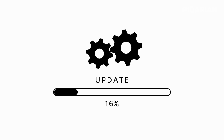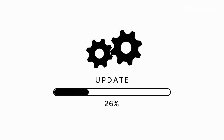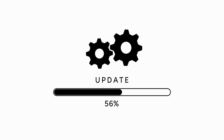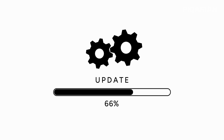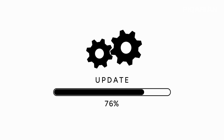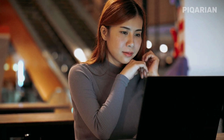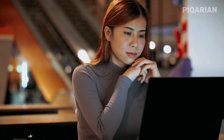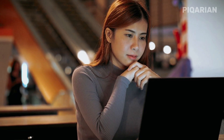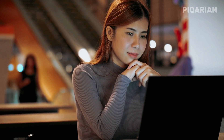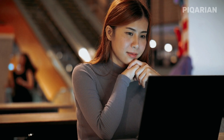You sit down to install an update on your PC. You wait for the progress bar, your system restarts, and then you see it: 'We couldn't complete the updates, undoing changes.' It's one of the most frustrating Windows messages because it feels like the system is working against you. Hours of waiting, and in the end, you're back where you started.